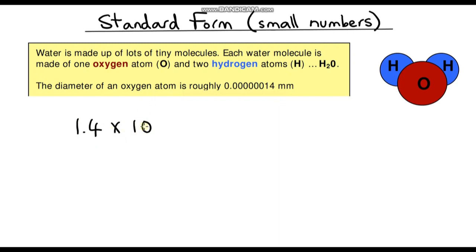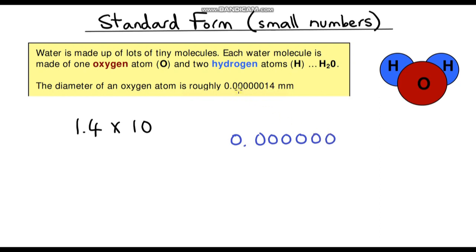Now we just need to think about our index or power, and this is where it's slightly different from really large numbers. Every time we multiply by 10 we get bigger, but this time we're getting smaller because we've got a really small number. So instead of putting a positive power, we just put a negative power — it's completely the opposite. I like to copy out the number again: 0.000000 — there are six zeros — then 1, 4.